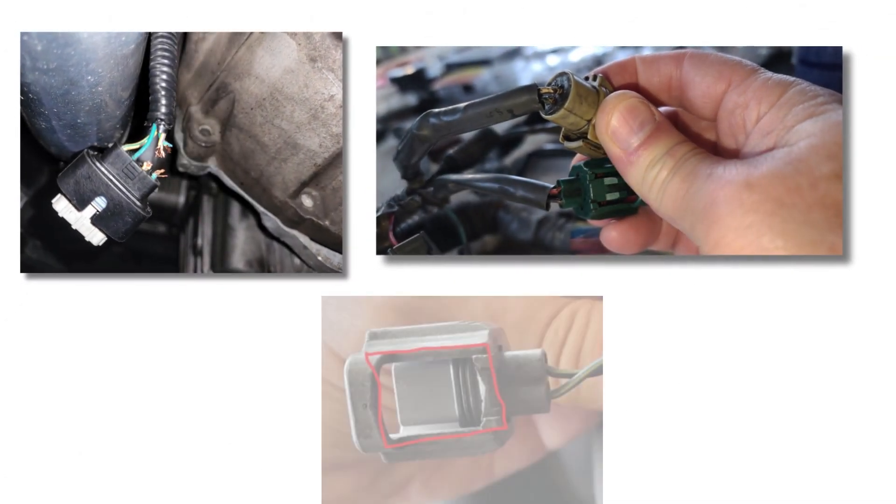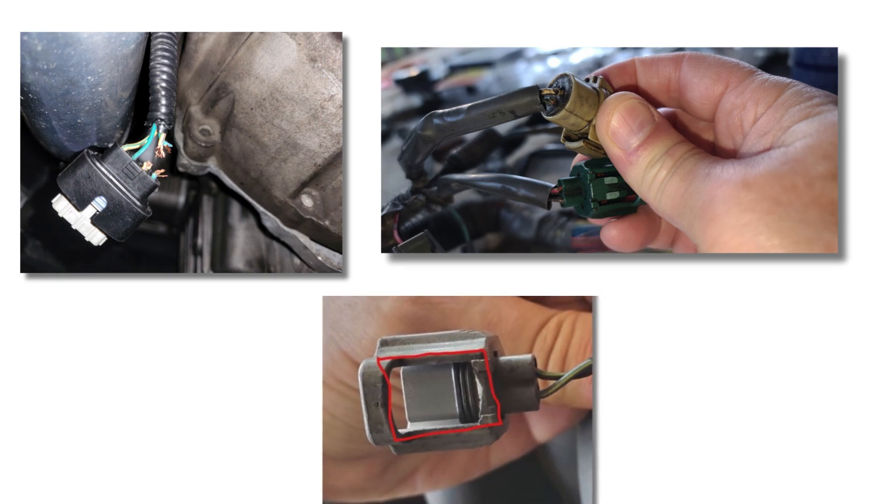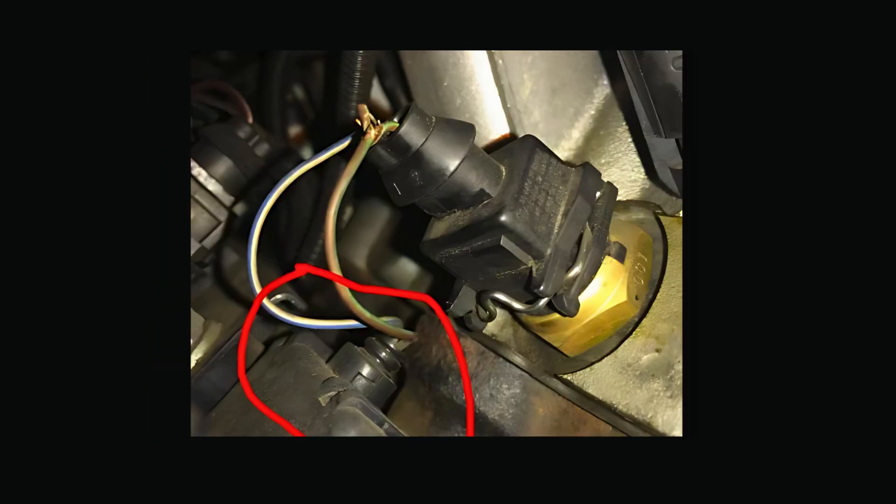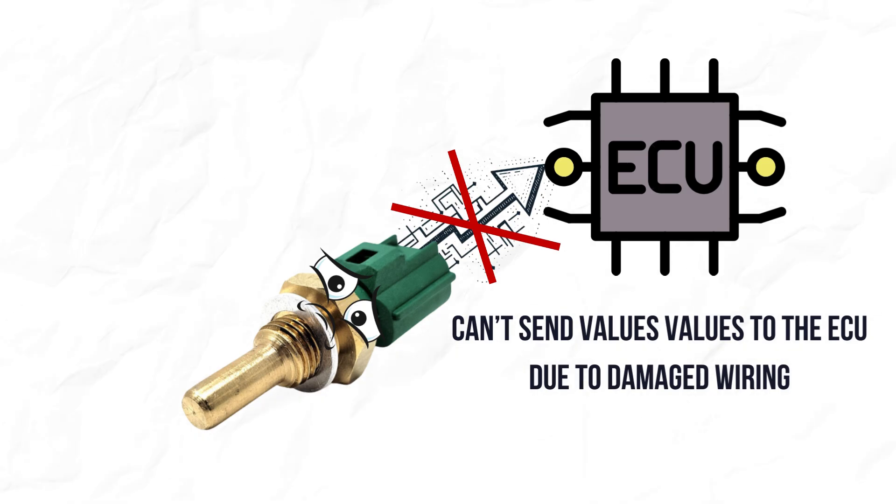One common culprit of a faulty ECT sensor is wiring issues. Damaged or corroded wiring, or loose or disconnected connectors, can prevent the sensor from sending accurate readings to the ECM.